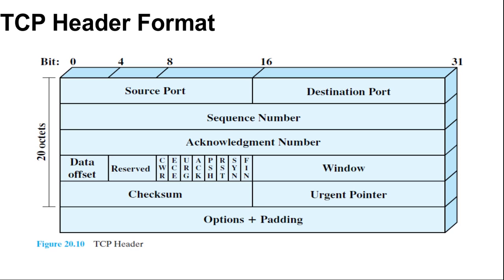For more about checksum: the checksum field applies to the entire segment plus a pseudo header prefixed to the header at the time of calculation at both transmission and reception. The pseudo header includes the following fields from the IP header: source and destination internet address, protocol, plus a segment length field. By including the pseudo header, TCP protects itself from misdelivery by IP. If IP delivers a packet to the wrong host, even if the packet contains no bit errors, the receiving TCP entity will detect the delivery error.